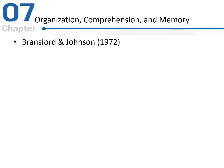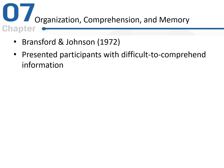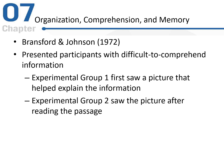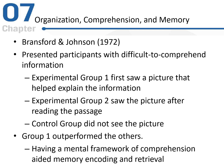Now we can look at organization, comprehension, and memory with the Bransford and Johnson study. Looking at difficult-to-comprehend information, they split participants into three separate groups. Experimental group one saw a picture that helped explain the story information before they read the story. Experimental group two saw the picture after they read the passage. The control group didn't see the picture at all. What they found was that group one outperformed the other groups, lending support that having some sort of mental framework for comprehension aids memory encoding and retrieval.